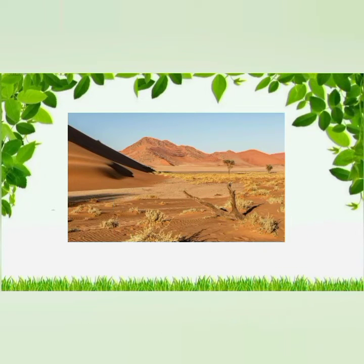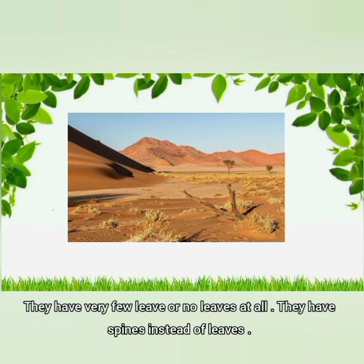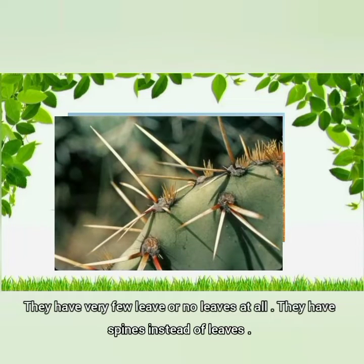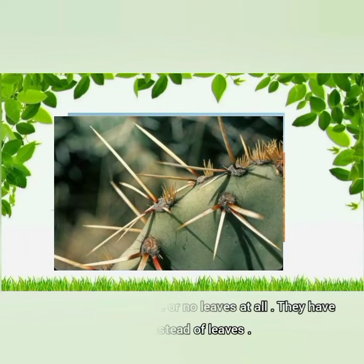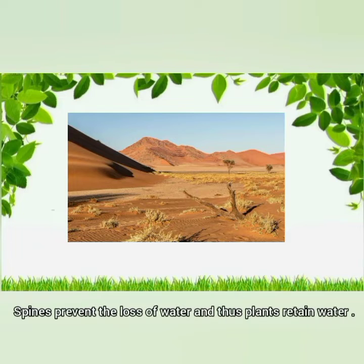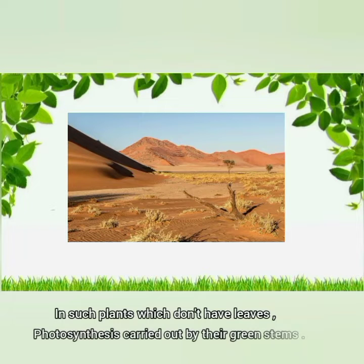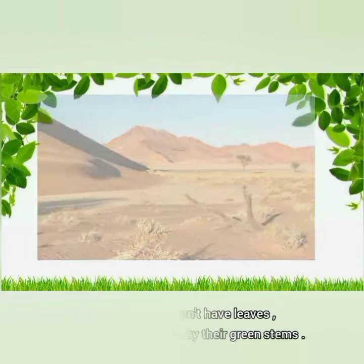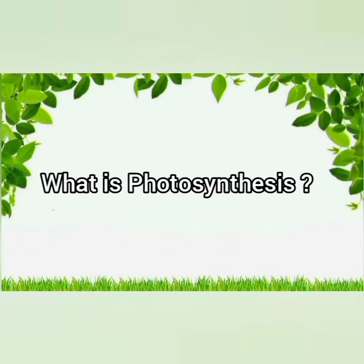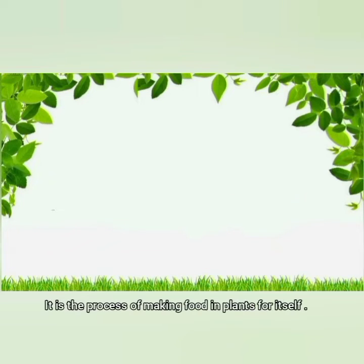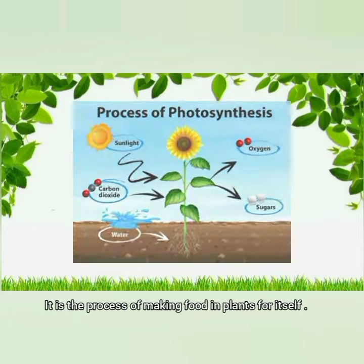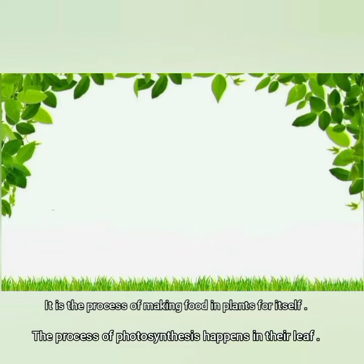To obtain water from soil and to prevent water loss, desert plants have the following features. They have very few leaves or no leaves at all. They have spines instead of leaves. Spines prevent the loss of water, and thus plants retain water. In such plants which don't have leaves, photosynthesis is carried out by their green stems. Photosynthesis is the process of making food in plants; it normally happens in the leaves.